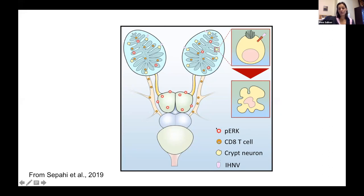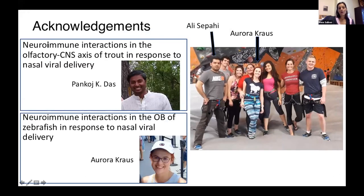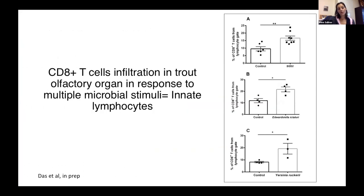This is where we left it at, and we are still following this up in depth. This original work by Ali was taken over by Pankosh Das, who was a master's student in the lab and is now at Emory University, as well as Aurora, who is about to defend her PhD. She has been taking this model to zebrafish because we have more tools there to look at the neuronal part of the model. I'm going to give you an update on the rainbow trout model, highlighting non-model organisms, though we also have really exciting results from zebrafish.